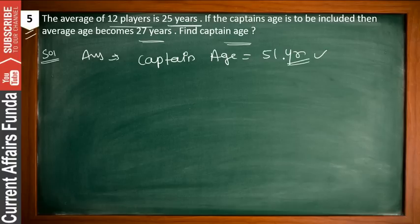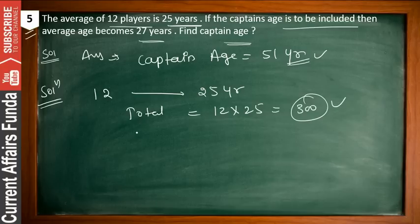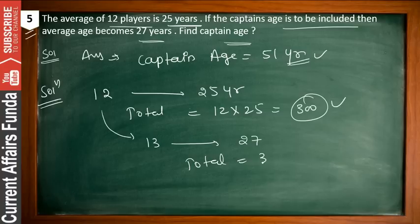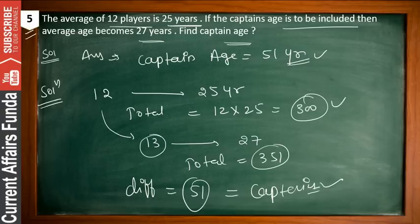There are 12 players with an average of 25 years, so the total is 12 into 25, which equals 300. If the captain's age is included, that means 12 plus 1 equals 13, and their average becomes 27. So the new total is 13 into 27, which equals 351. Take the difference: 351 minus 300 equals 51. That is the captain's age.